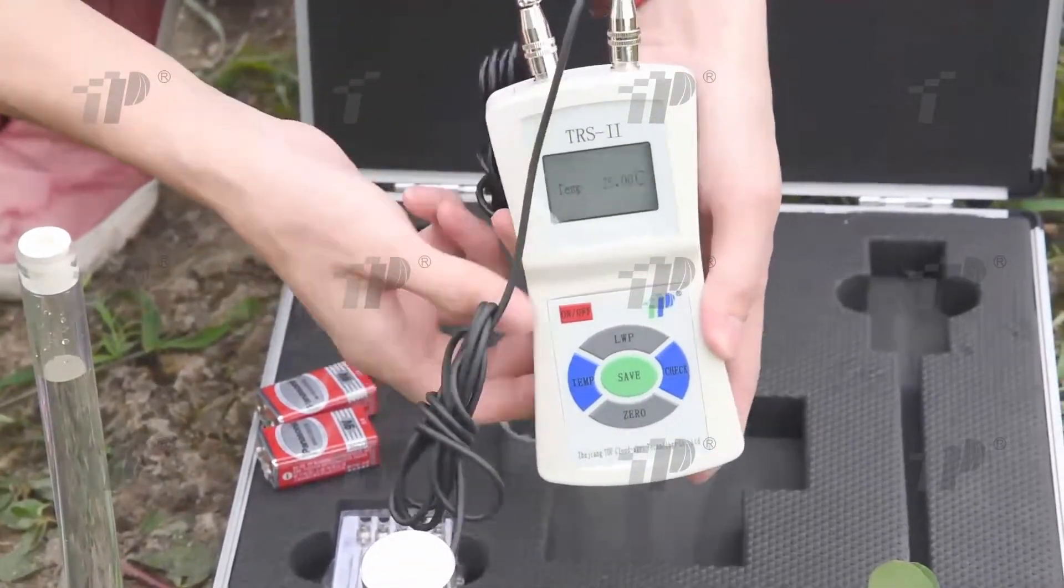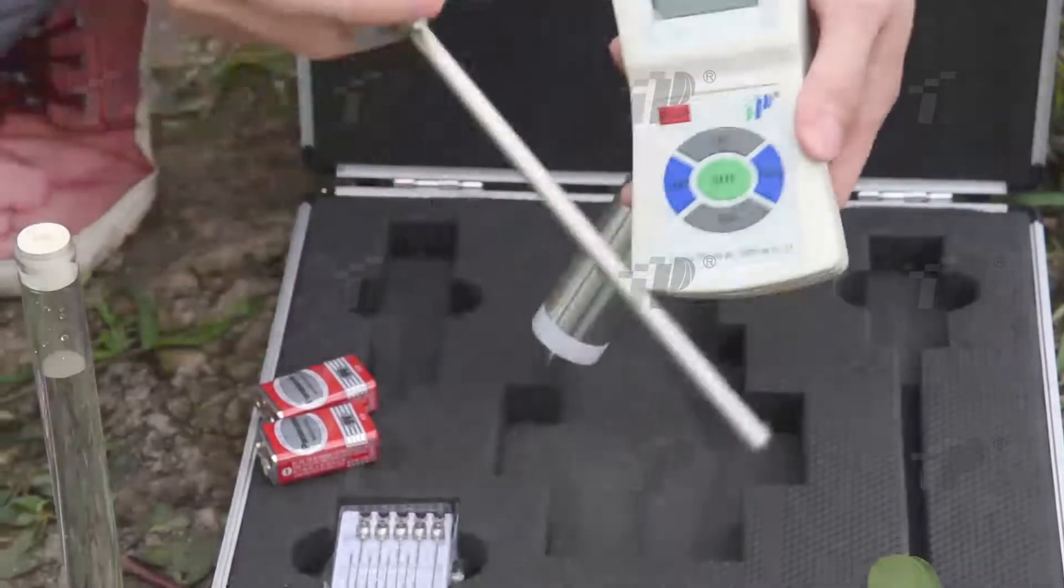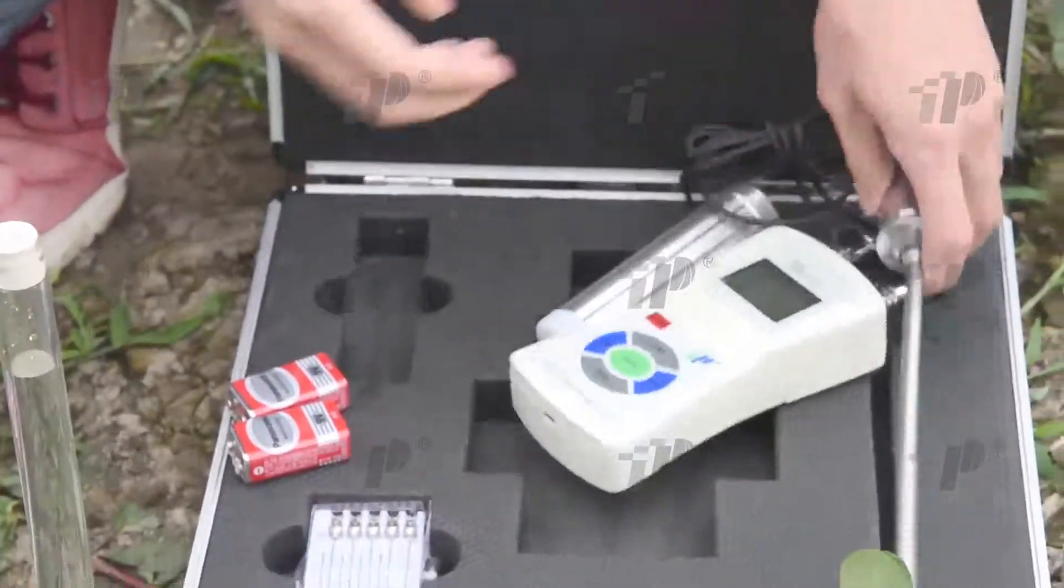If the soil is hard, you can use an iron stick to create a hole at the needed measuring position, then push in the sensor.